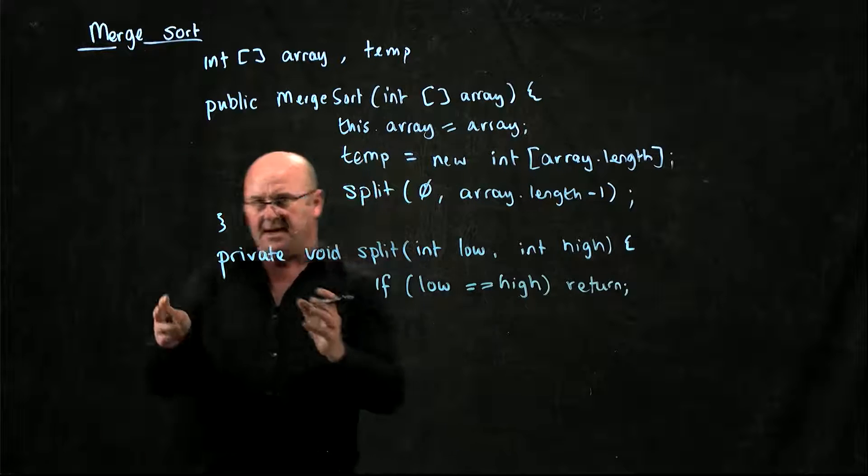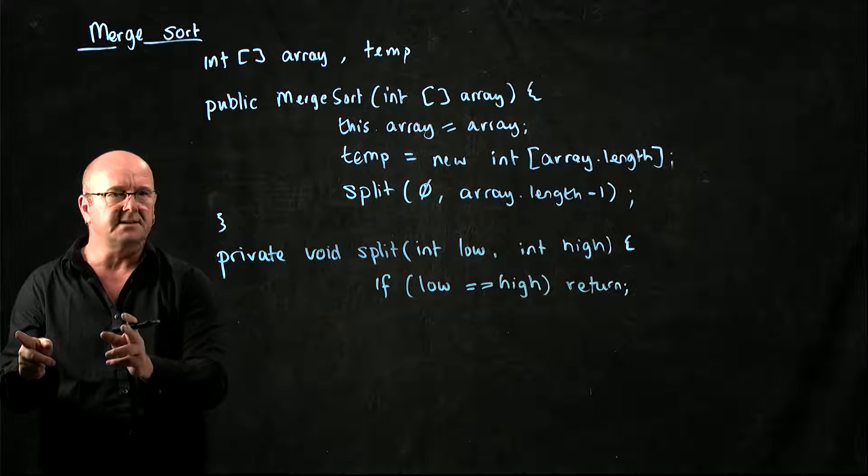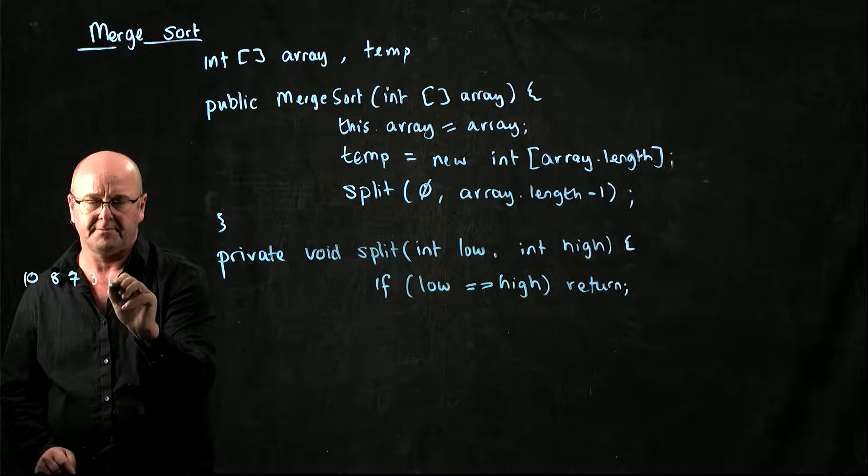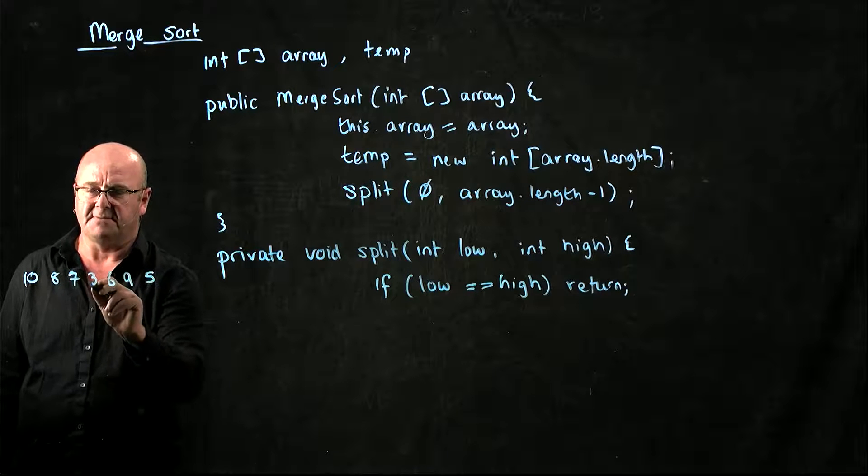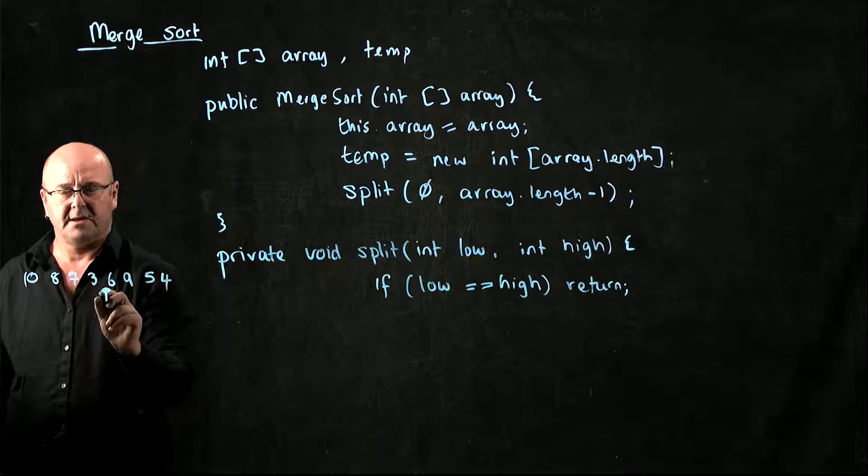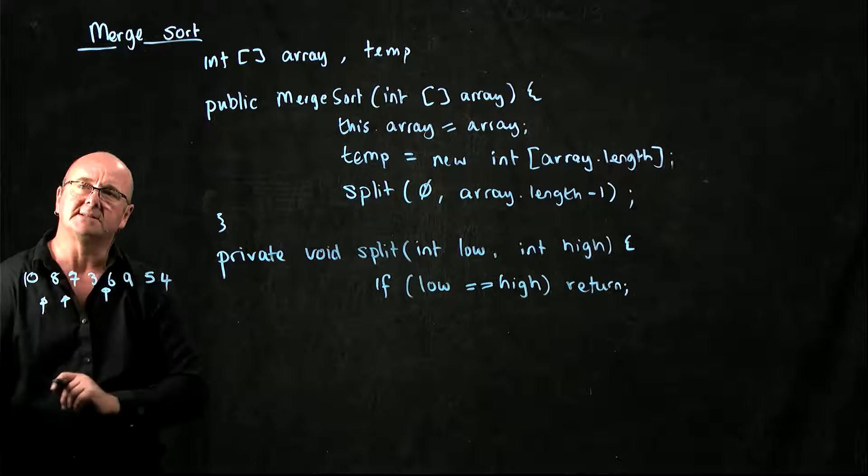Now what we're going to do is we're going to say, okay, we don't have a sorted list. So let's take, here's our list again. Remember what we're going to do is we're going to divide the list in two. Then we're going to divide the list in two again, and then we're going to divide the list in two again, until we get a single element list.